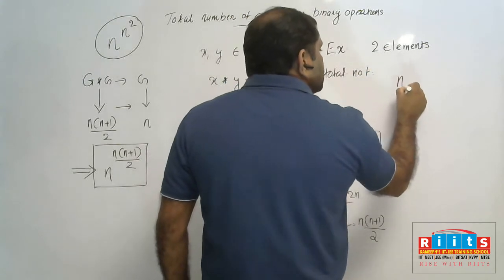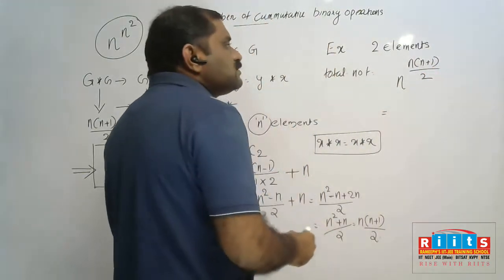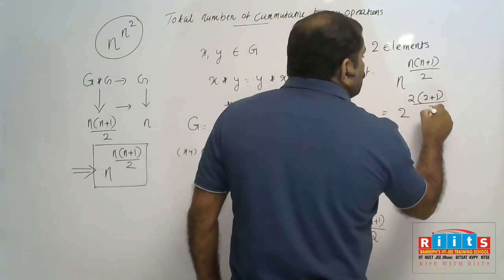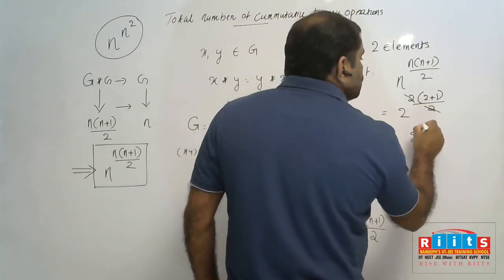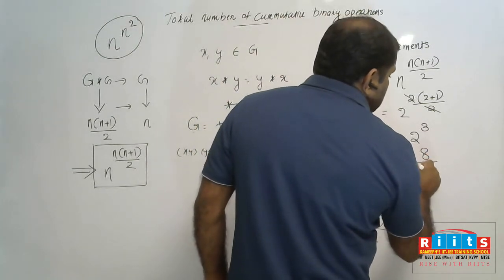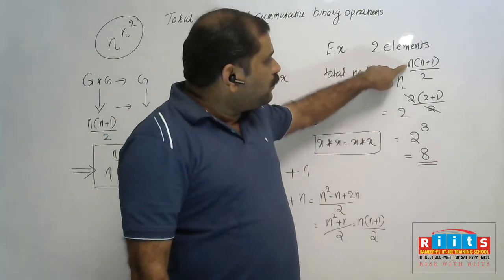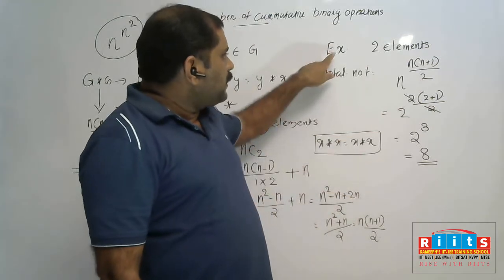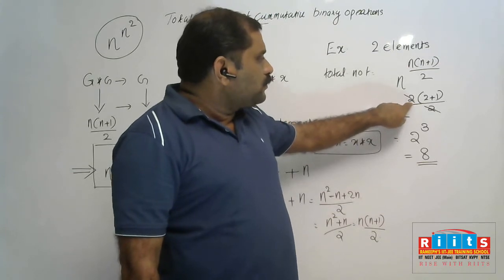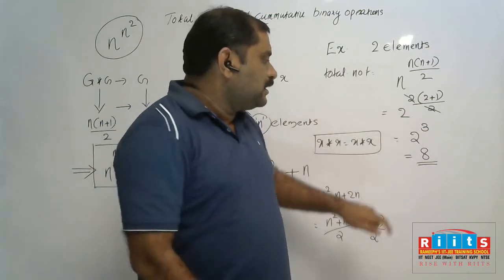For example, if n equals 2: commutative binary operations = 2 raised to 2(2+1)/2 = 2 raised to 3. The 2s cancel, giving 2³ = 8. So the total number of commutative binary operations when the set contains 2 elements is 8.